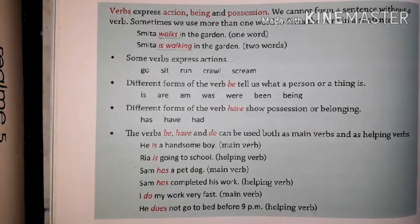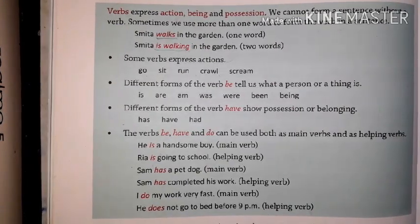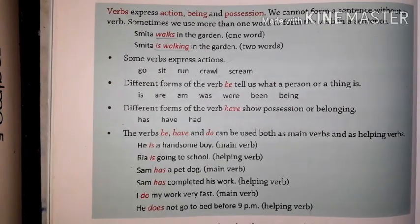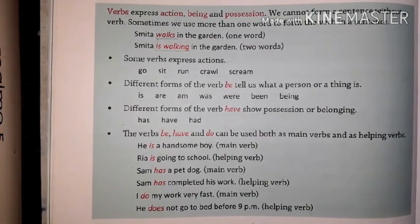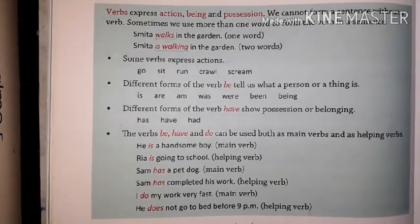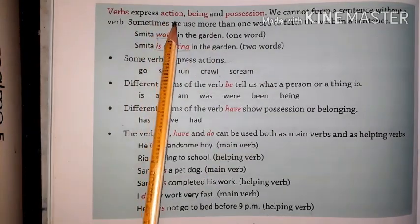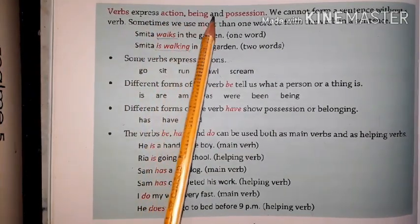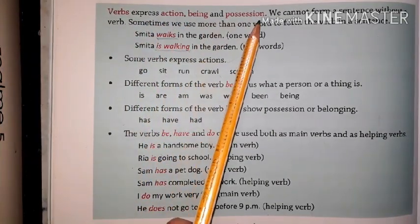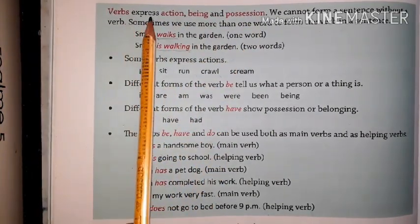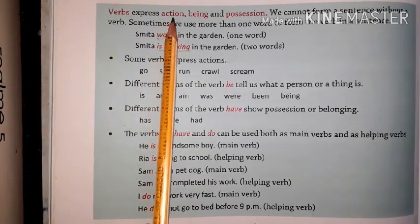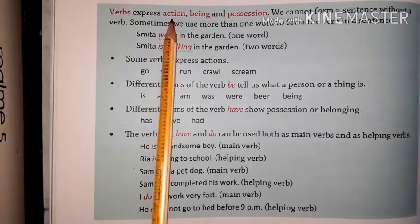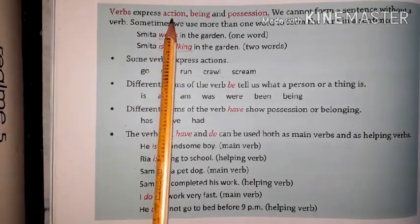First of all, I would like to tell you what a verb is. A verb is an action word and stative — any situation. The verb expresses action, being, and position. Action verbs include words like go, come, play,